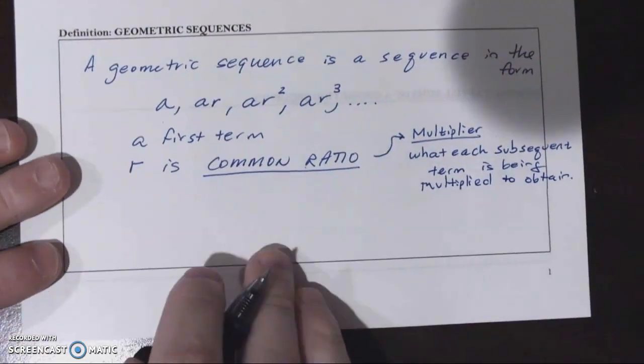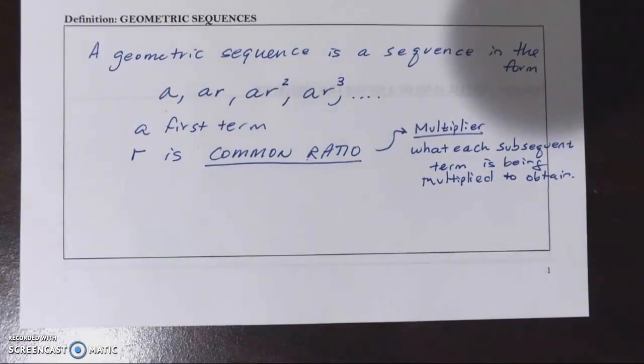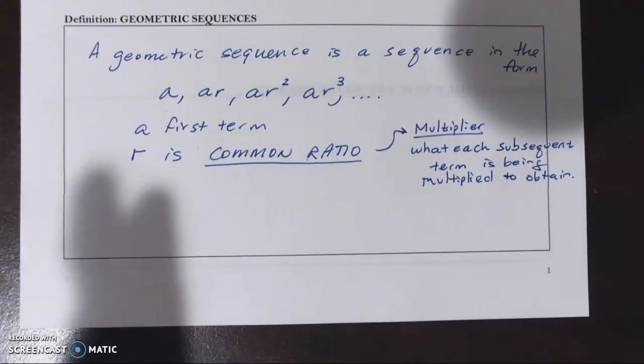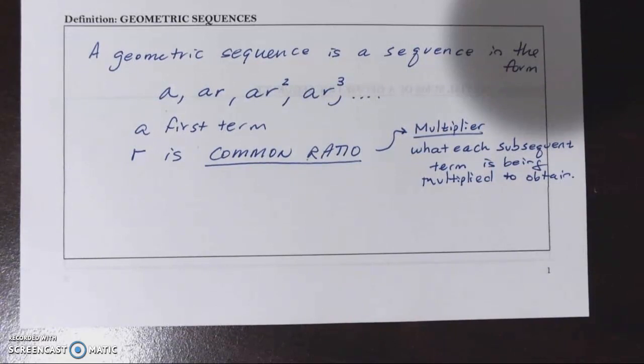So when we talked about arithmetic sequences, we talked about how from one term to the next there was a constant that was being added. We called that the common difference. In geometric sequences you're going to see that from one term to the next there's going to be a constant, but instead of being added it's going to be multiplied. And that's what's called our common ratio.